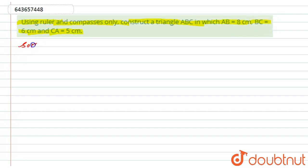So in this question we have to construct a triangle by using a ruler and compasses only, for which the length of its sides is given to us: 8 centimeter, 6 centimeter, and 5 centimeter. So first of all, I will write here the steps of construction.